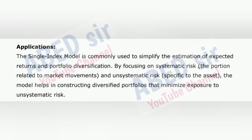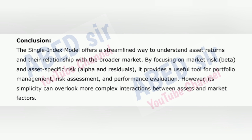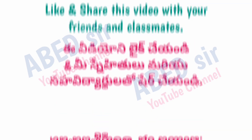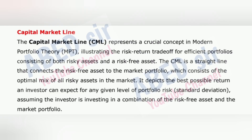Residual risk — epsilon: the part of the asset's return that cannot be explained by market movements. This is often referred to as unsystematic risk, as it is specific to the asset itself. Applications: The single index model is commonly used to simplify the estimation of expected returns and portfolio diversification. By focusing on systematic risk — the portion related to market movements — and unsystematic risk specific to the asset, the model helps in constructing diversified portfolios that minimize exposure to unsystematic risk. Conclusion: The single index model offers a streamlined way to understand asset returns and their relationship with the broader market. By focusing on market risk (beta) and asset-specific risk (alpha and residuals), it provides a useful tool for portfolio management, risk assessment, and performance evaluation. However, its simplicity can overlook more complex interactions between assets and market factors.